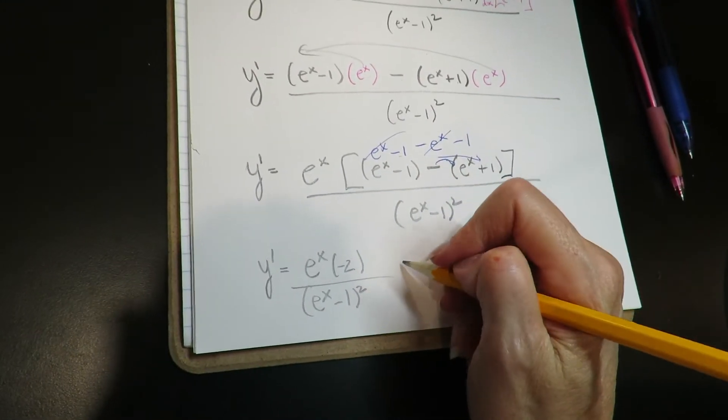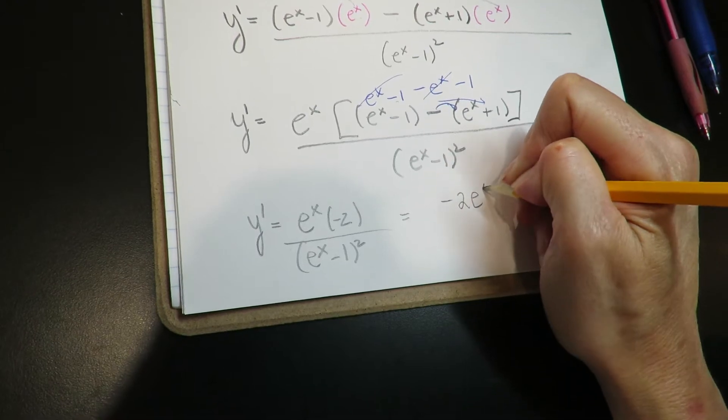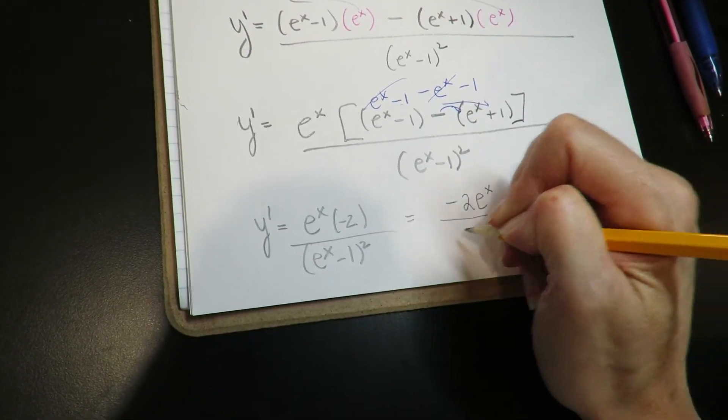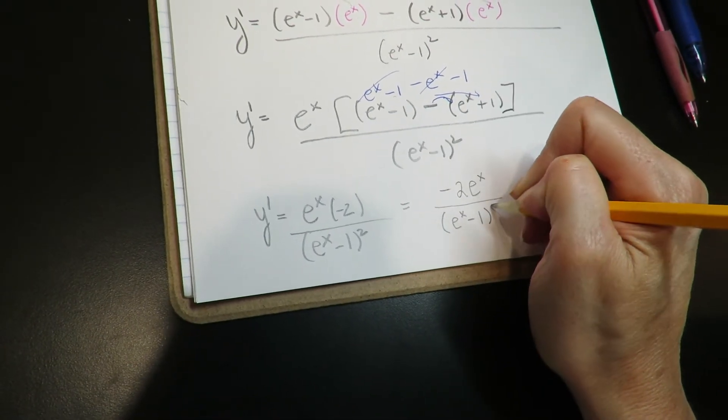I'm just going to make this look a little better. I'm going to put the minus 2 in front. So minus 2 e to the x over e to the x minus 1 quantity squared.